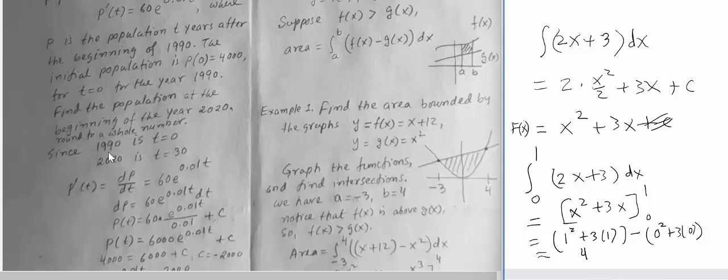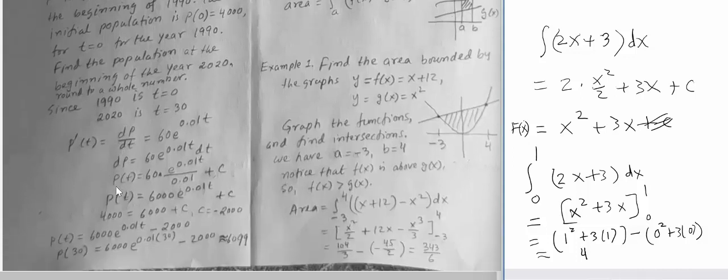When you're talking about 2020, the difference is 30, so t is 30. We take the integral, so we found our integral p(t) is this one, and we add a constant. Use the initial condition p(0), that gives you c is negative 2000, and then plug it back. After that you calculate for t equals 30.